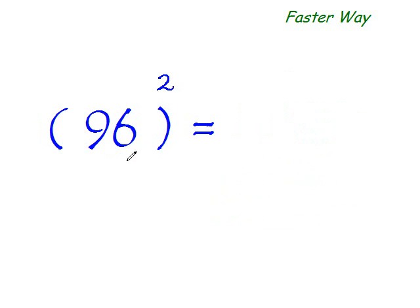Now what if the number that we are trying to square is below the base, that is below 100? Once again, the same thing. 96 is at the distance of minus 4 from 100, isn't it? So subtract that 4 from 96.